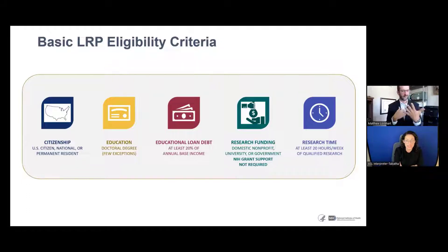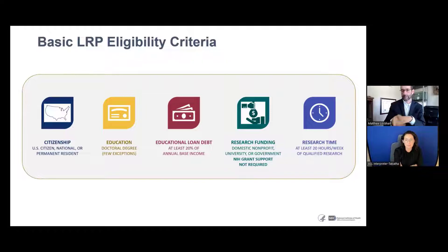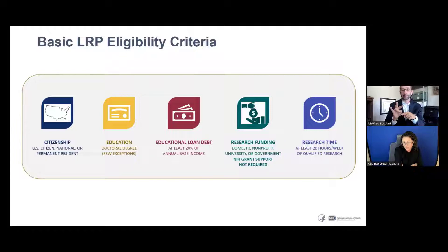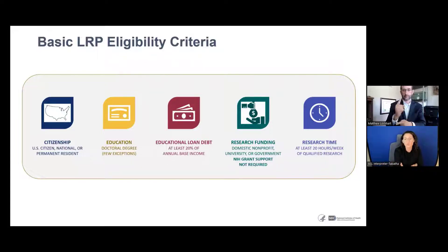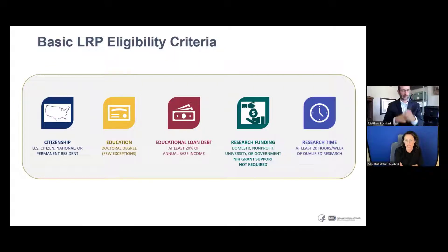Moving on to eligibility criteria. There are five basic criteria that must be met before you start your application. The award date is about July 1st, and you are notified if you were awarded. This cycle, opening next week, has an application deadline of November 17th. The awards will start July 1st, 2023, so all five criteria must be met by July 1, 2023 for this year's application cycle. First, you must be a U.S. citizen, national, or permanent resident.